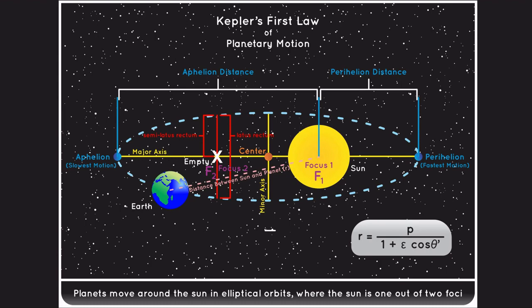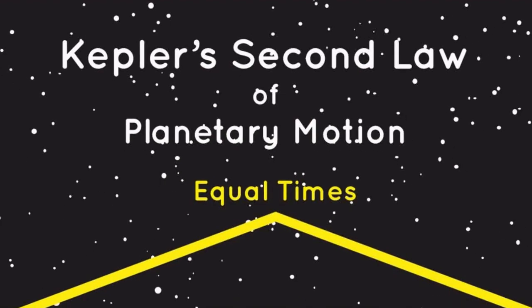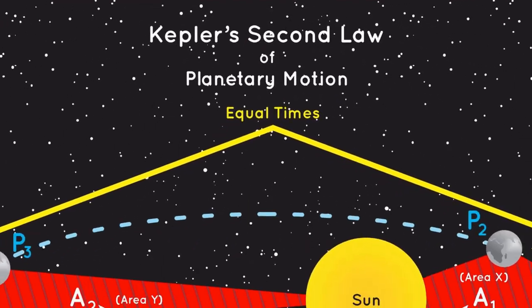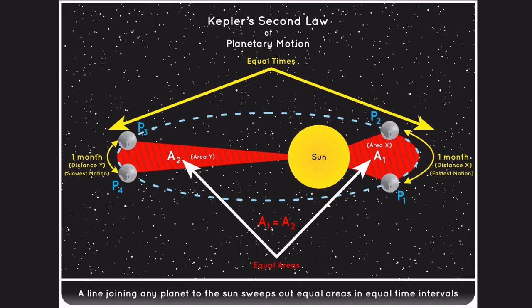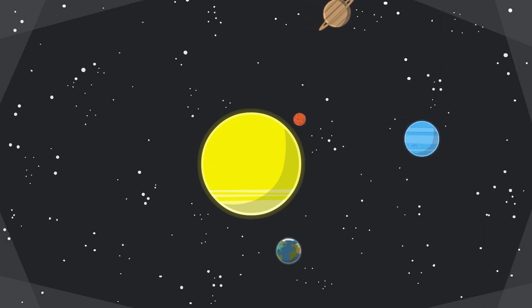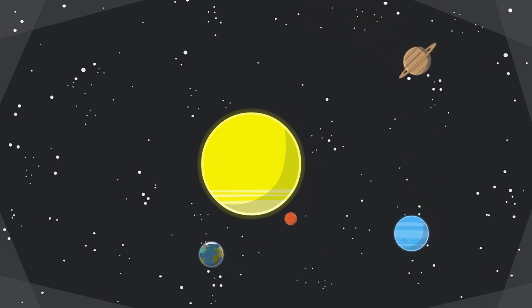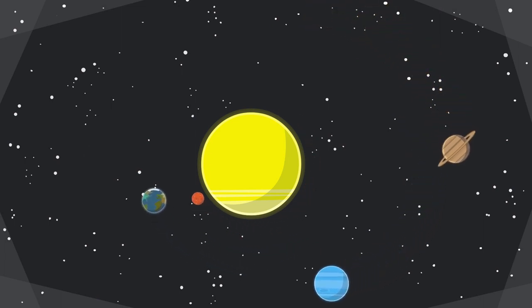This contradicted the prevailing belief of circular orbits. Kepler's second law, the Law of Equal Areas, states that a line segment connecting a planet to the Sun sweeps out equal areas in equal times. This law explains the varying speeds at which planets move in their orbits — as they are closer to the Sun, they move faster, and slower when farther from the Sun.